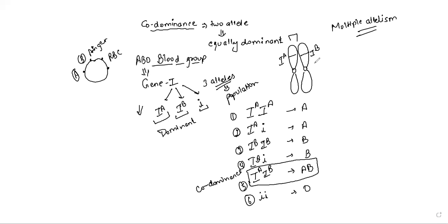This is multiple allelism. The ABO blood group system is also an example of multiple allelism — we call it multiple allelism when more than two alleles are possible for a particular character. So the blood group system is an example of both co-dominance and multiple allelism.